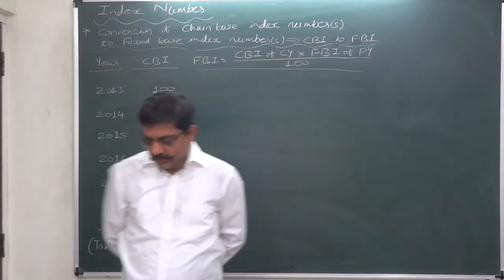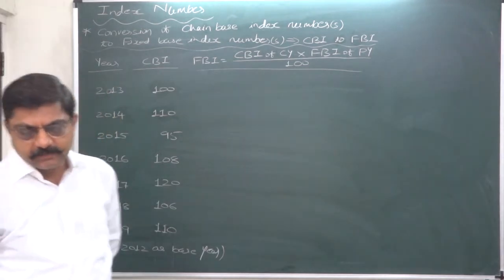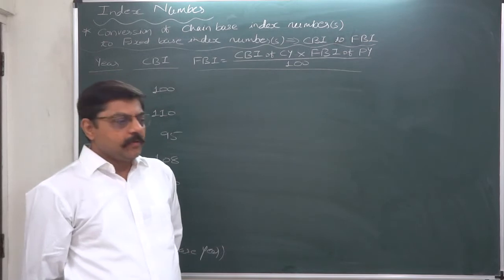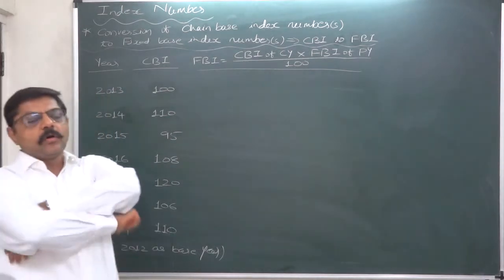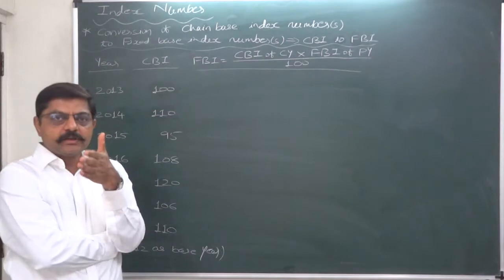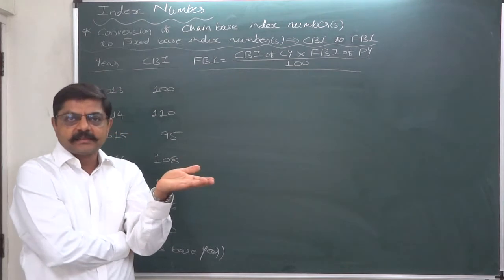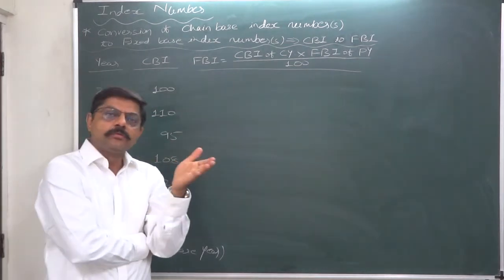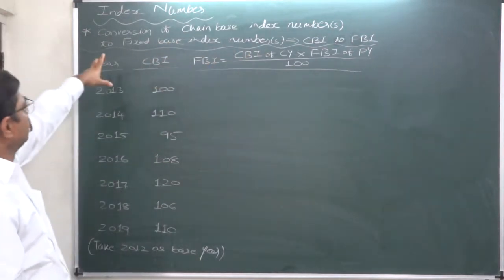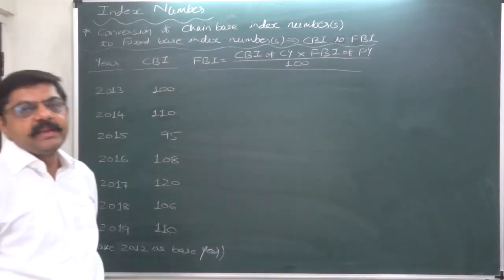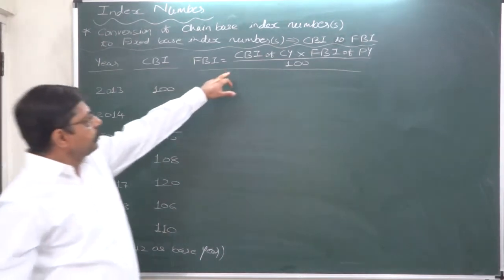Hello and welcome friends. We have already covered how to calculate fixed base index numbers and chain base index numbers. Now let's go to a very interesting topic: conversion of base of index numbers — that means conversion of chain base index numbers into fixed base index numbers, as well as conversion of fixed base index numbers into chain base index numbers. Let's start with the conversion of chain base index numbers to fixed base index numbers, CBI to FBI.